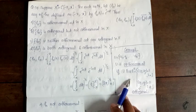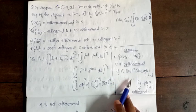So the first condition is violated, meaning fn is not orthonormal. However, this set is orthogonal.